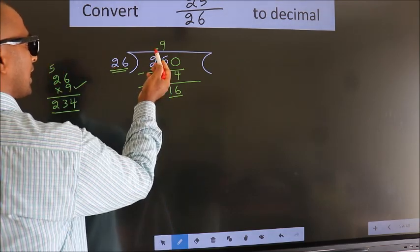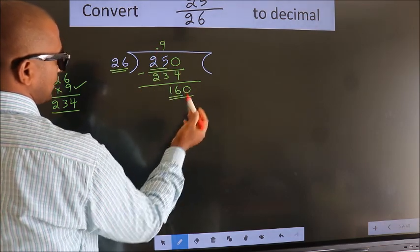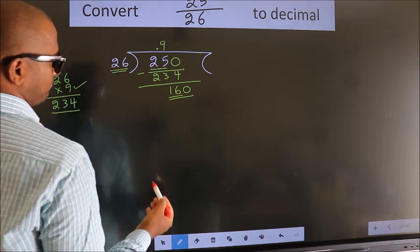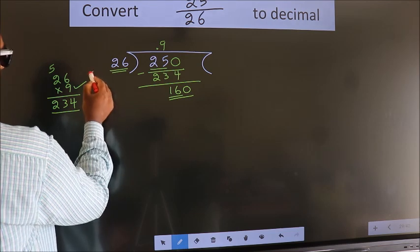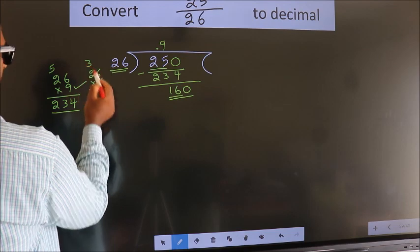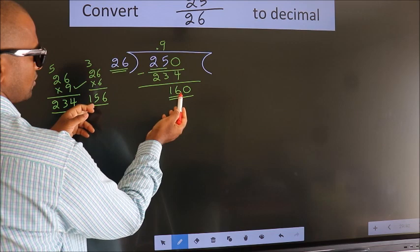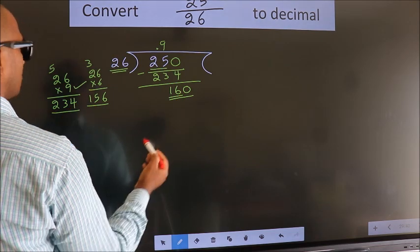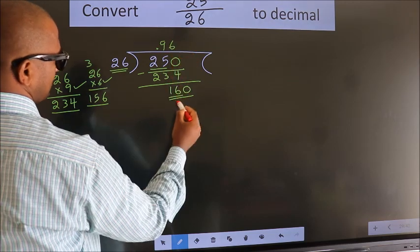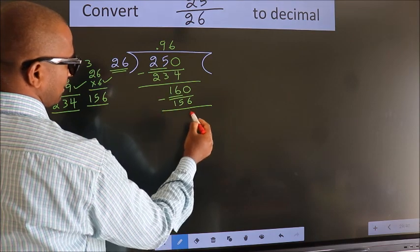We already have the decimal, so we can directly take 0. So 160. A number close to 160 in the 26 table — let us go with 6. So 26 times 6: 6×6=36, 6×2=12, plus 3 gives 15, so 156. 156 is close to 160, so we go with 6. So 26 sixes is 156. Now we subtract. We get 4.